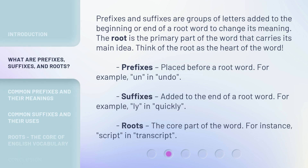Prefixes and suffixes are groups of letters added to the beginning or end of a root word to change its meaning. The root is the primary part of the word that carries its main idea. Think of the root as the heart of the word. Prefixes are placed before a root word — for example, 'un-' in 'undo.' Suffixes are added to the end of a root word — for example, '-ly' in 'quickly.' Roots are the core part of the word — for instance, 'script' in 'transcript.'